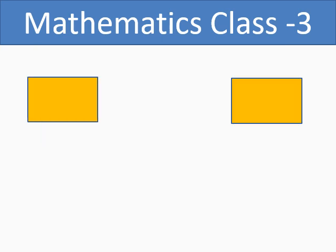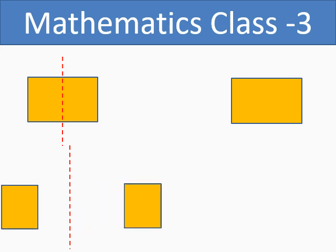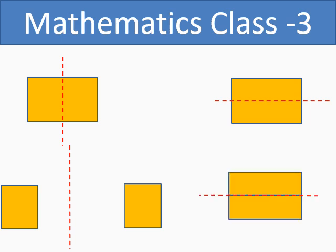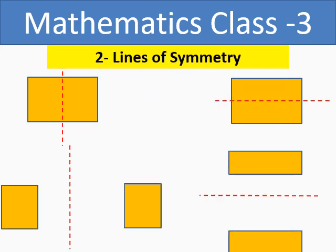Now let us take the example of two lines of symmetry. Let us take a rectangle. Draw a vertical line passing from the middle — you will get two equal halves along the vertical line, so we have a vertical line of symmetry. Similarly, draw a horizontal line passing from the middle — again you will get two equal halves along the horizontal line, so we have a horizontal line of symmetry as well. So we have two lines of symmetry in the rectangle.